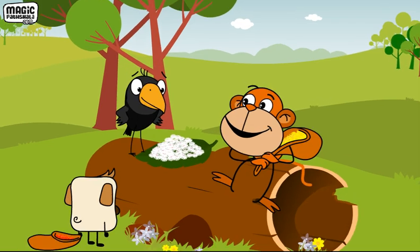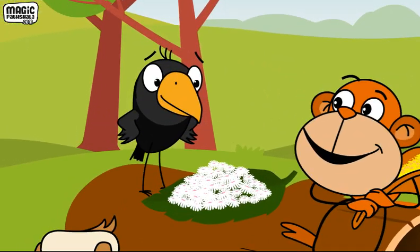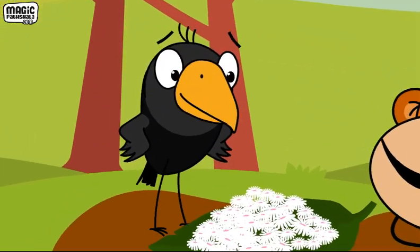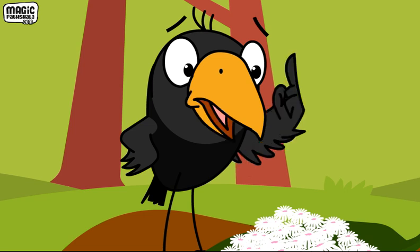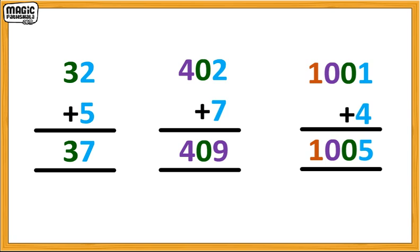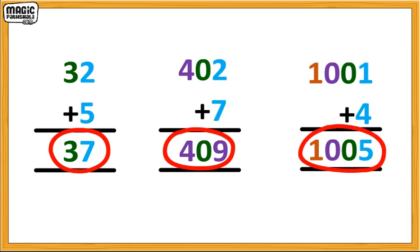So they need to add the number of flowers Gul has collected to the number of flowers Jojo has collected. Remember how you added two-digit and three-digit numbers? You have to follow the same steps to add four-digit numbers too.